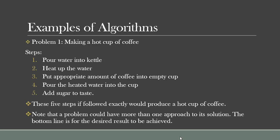Making a hot cup of coffee. The steps involved in solving this problem are five steps. The first step is pouring water into a kettle. We pour water into a kettle. The next step is to heat up the water. And then the third step is to put an appropriate amount of coffee into an empty cup. The fourth step is to pour the heated water into the cup. And then the last step is to add sugar to taste.